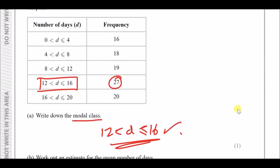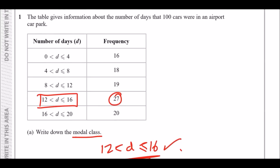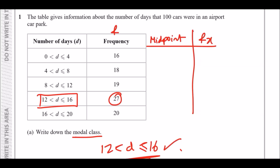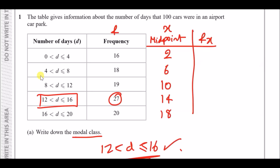Part B: work out an estimate for the mean number of days. To calculate the mean we need two things: the midpoint of each class, and FX where F is the frequency and X is the midpoint. The midpoint is the value between the interval — so between 0 and 4 days the midpoint is 2, between 4 and 8 it's 6, then 10, 14, and 18. A nice method is to sum the bounds and halve them — for example 4 plus 8 is 12, halved gives 6.